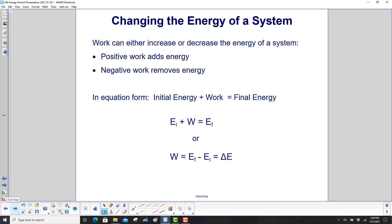Work can either increase or decrease the energy of a system. Positive work can add energy. Negative work can remove energy. Now we're not destroying or creating energy, we're just putting it into different places. In equation form, initial energy plus work equals the final energy. Or here's initial energy, here's work, here's final energy. Or we can rearrange that where work is EF minus EI or delta E for the change in energy.